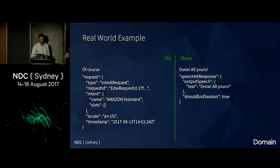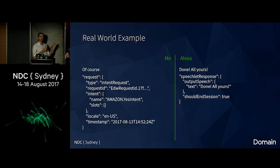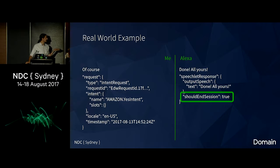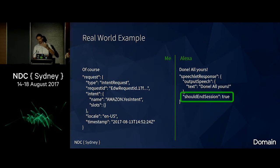'Done. All yours.' Make sure you try to keep the personality of Alexa as well — if you try the built-in tasks, you'll see it's got a bit of a personality, so try to keep that as much as possible. It's not a robot, it's your personal assistant. I'm setting 'should end session' to true to say the conversation is over, and the next time I want to ask something I'll have to say 'Alexa, ask Domain' and go again.